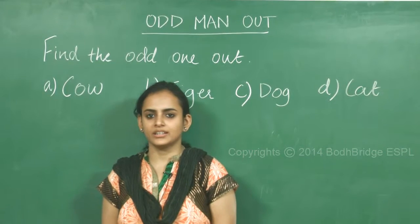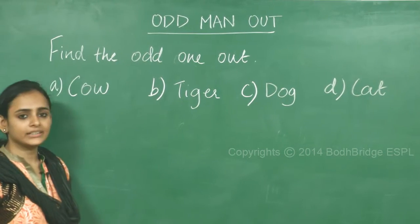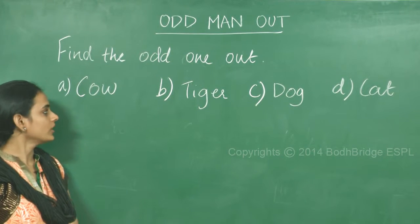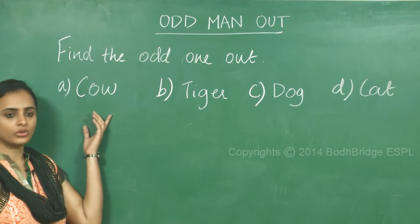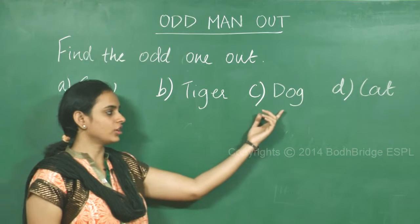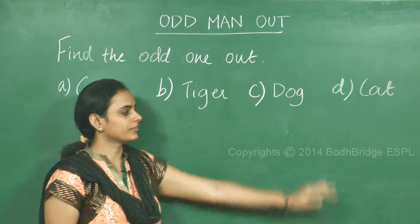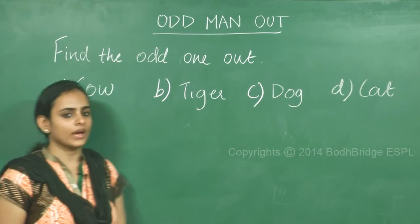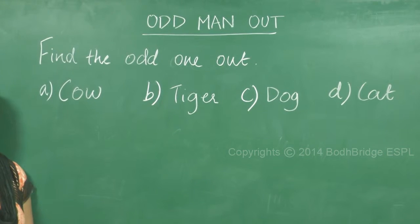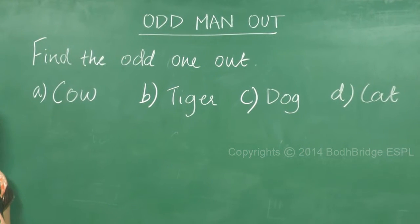Let us take another example. Find the odd one out. Option A: Cow. Option B: Tiger. Option C: Dog. And Option D: Cat. Now, as we know, Cow, Tiger, Dog, and Cat — all four are animals.